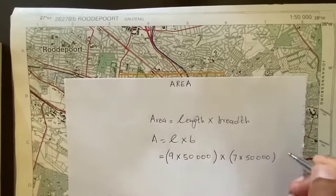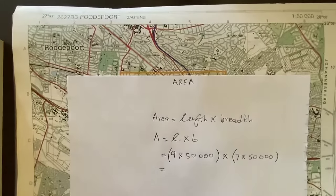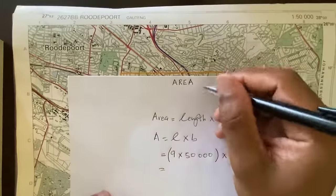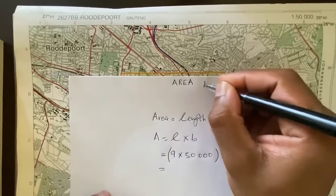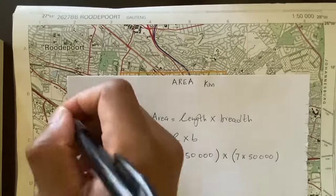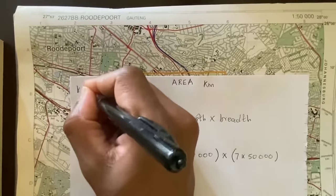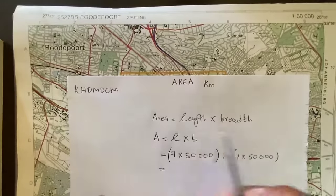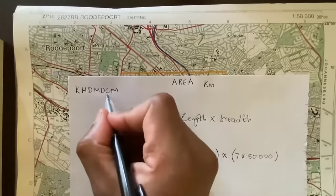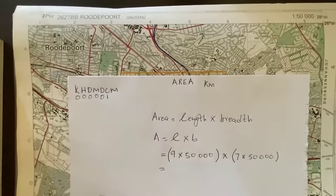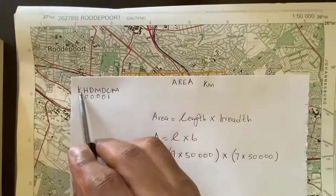At this step we need to go back to the question to determine whether our area should be in kilometers or hectares. For this example, let's say we are required to calculate our area in kilometers. For those who watched the previous video on distance, we use the scale converter — KHDM DCM — and we are in centimeters and want kilometers, so we place the one here and put zeros all the way to kilometers.